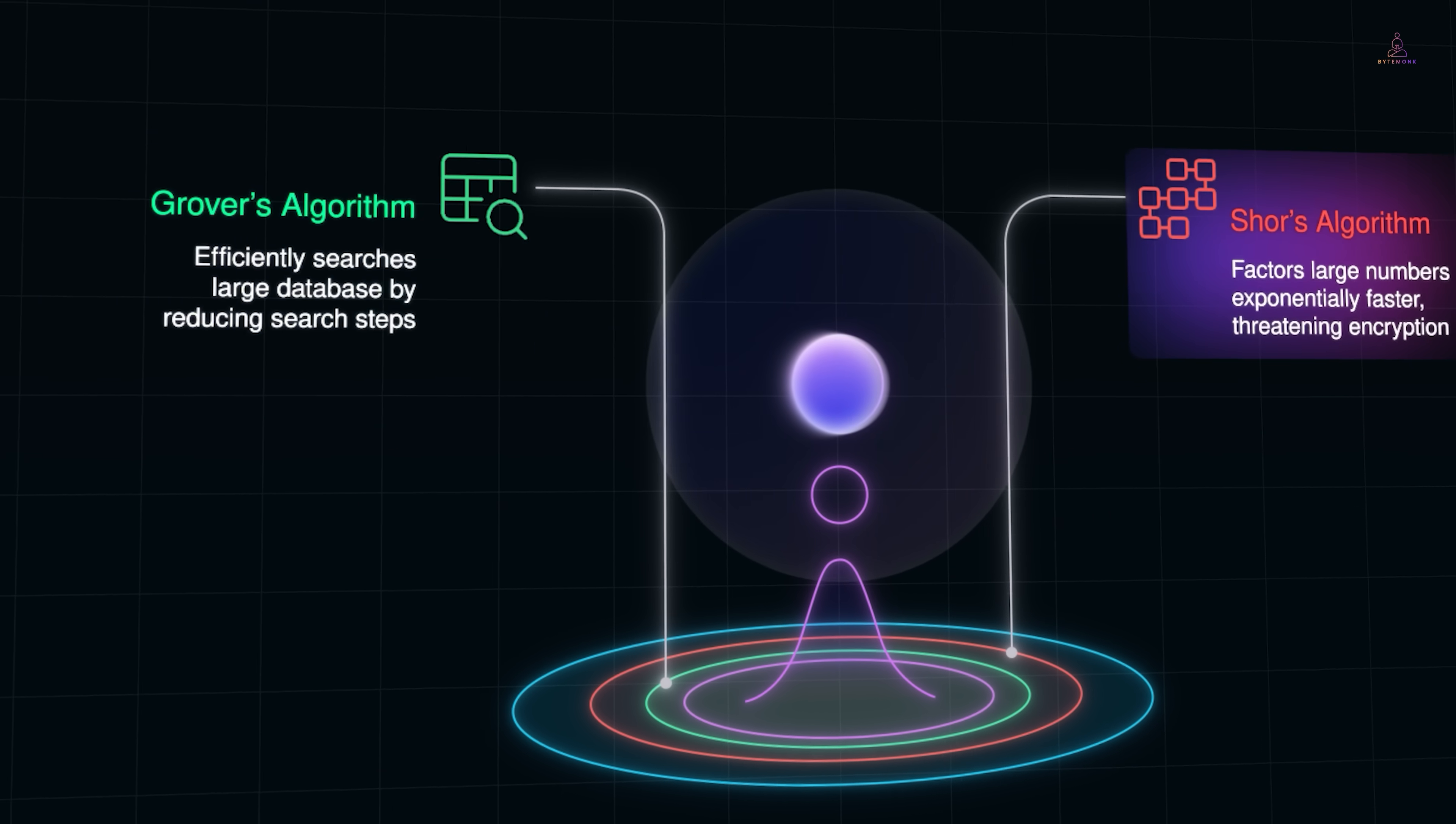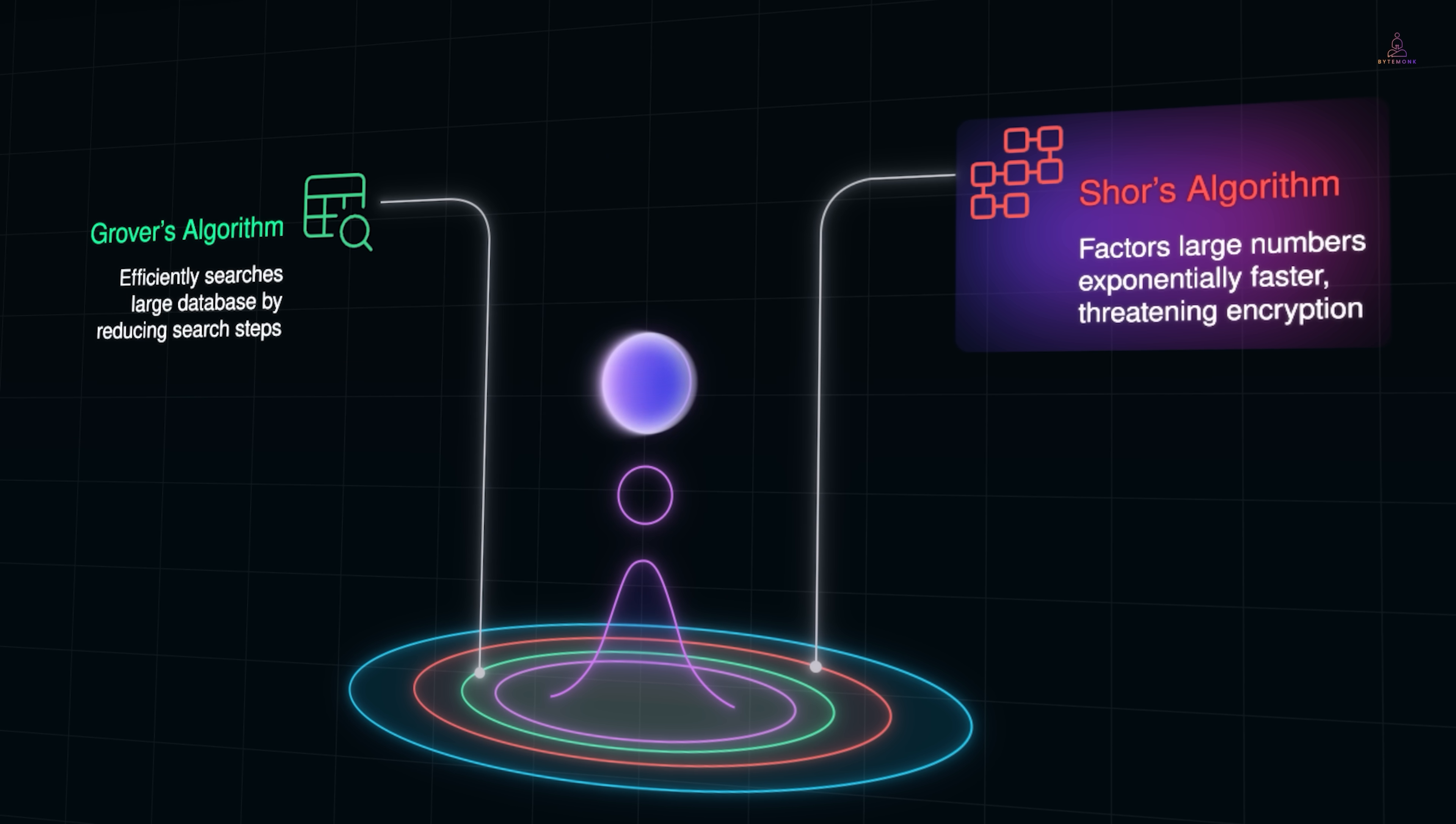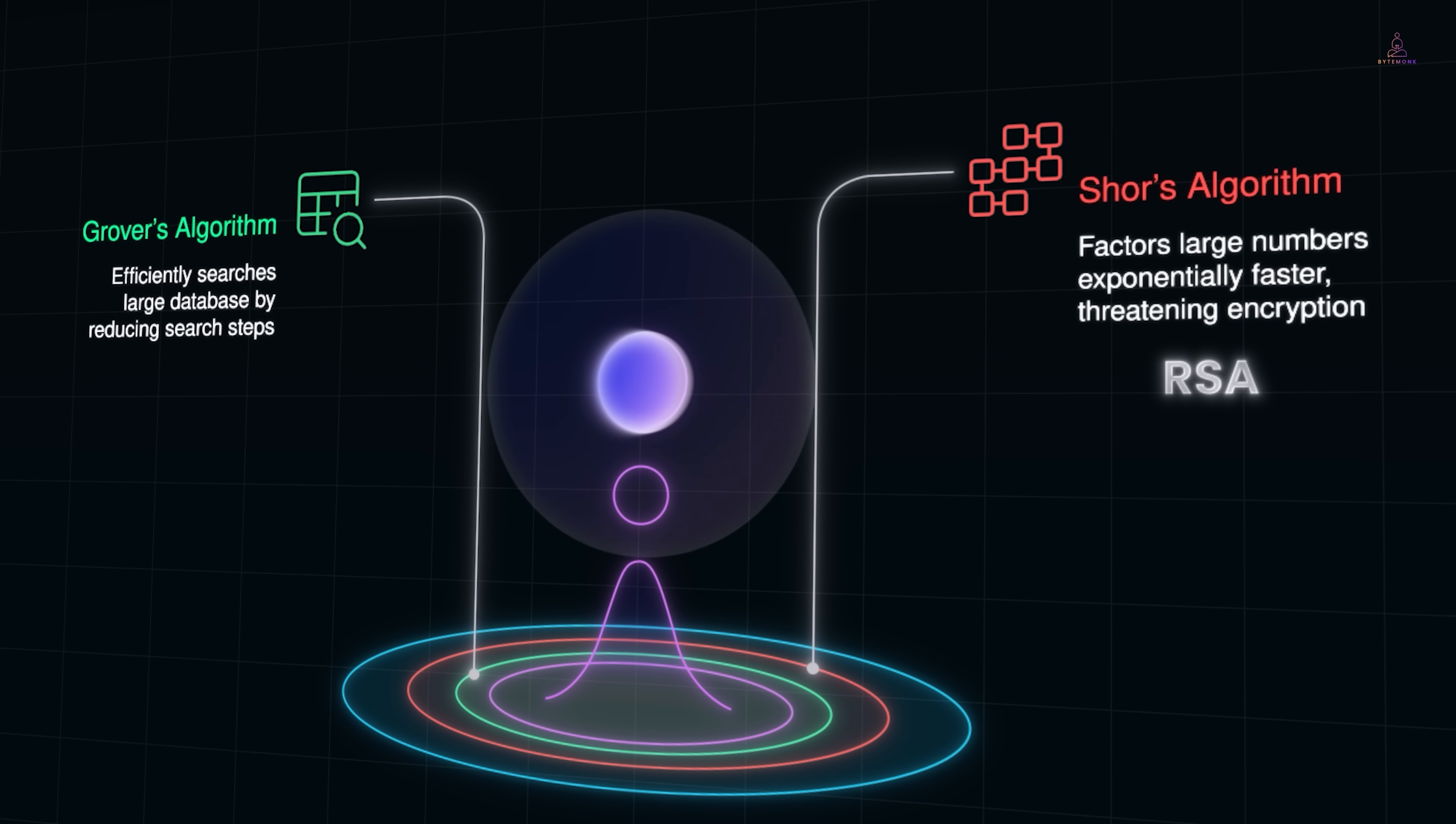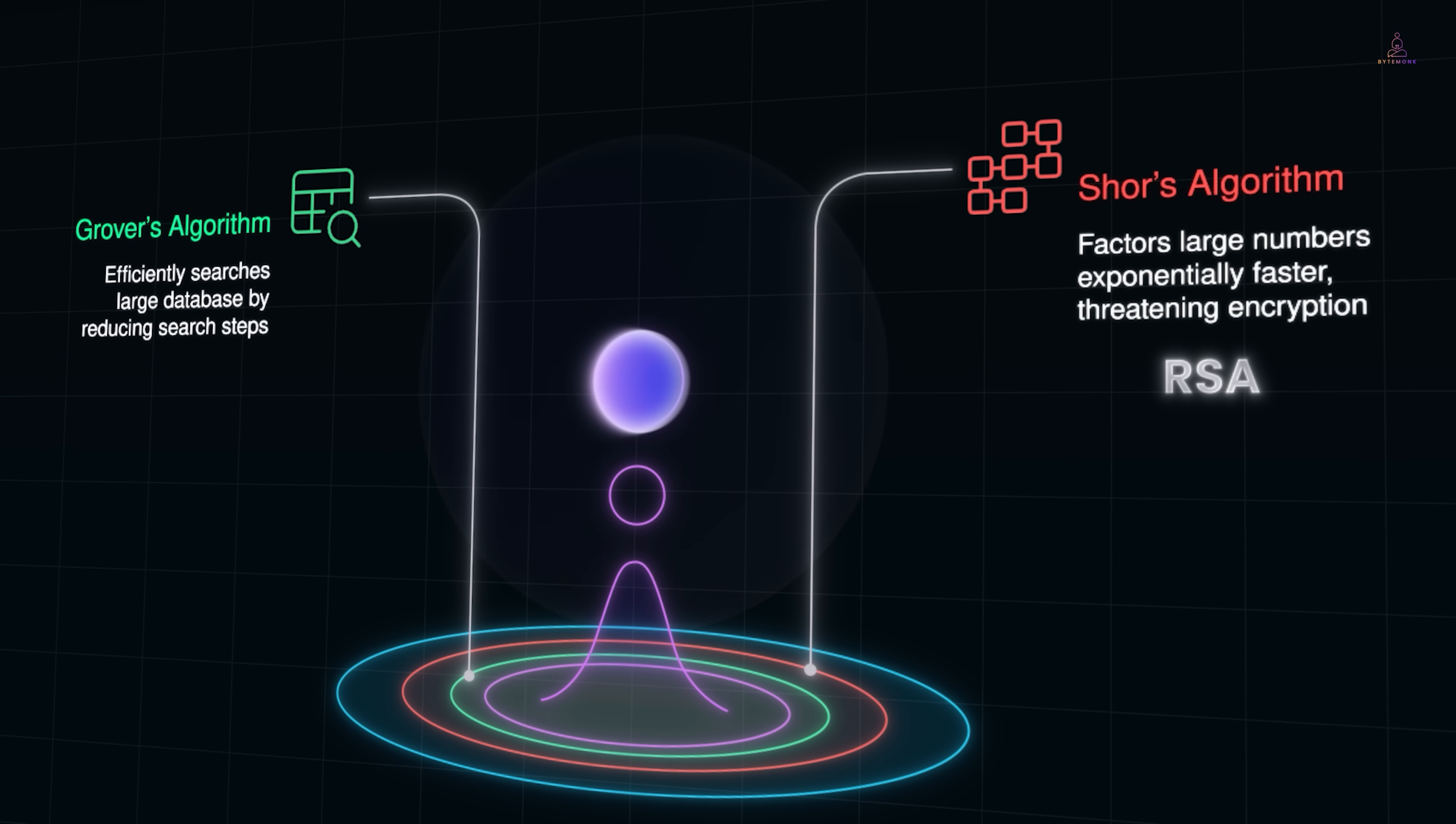Then there's Shor's algorithm, which goes after a very specific but very important problem: factoring large numbers. Why does that matter? Because modern encryption methods like RSA rely on the fact that factoring big numbers is hard for classical computers. Shor's algorithm can do it exponentially faster on a quantum computer, and that's why quantum computing is sometimes seen as a future threat to today's cryptography.